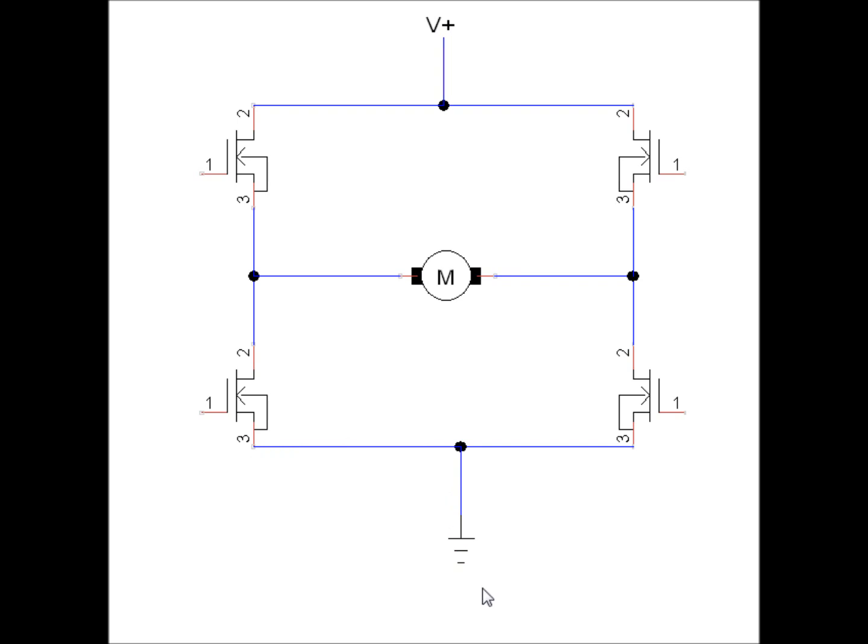The next mode of operation is a brake, or you can call it an electronic brake, which basically causes the motor to stop really quickly. That can be accomplished by turning this transistor on and this transistor on, or it can be done by turning this transistor on and this transistor on.